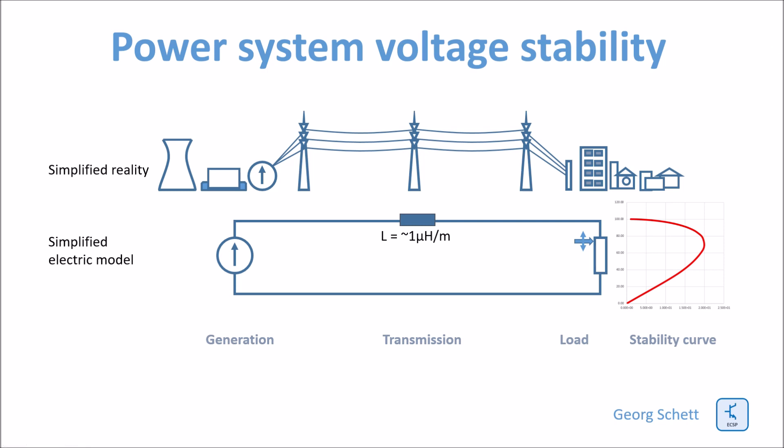For simplicity reasons, I use only a variable ohmic load. What you see on this curve is the relation between the power demand of the load and the voltage at the load. In order to increase the power demand of the load, you have to reduce the ohmic resistance of the load, and then there will be more current flowing through the load.